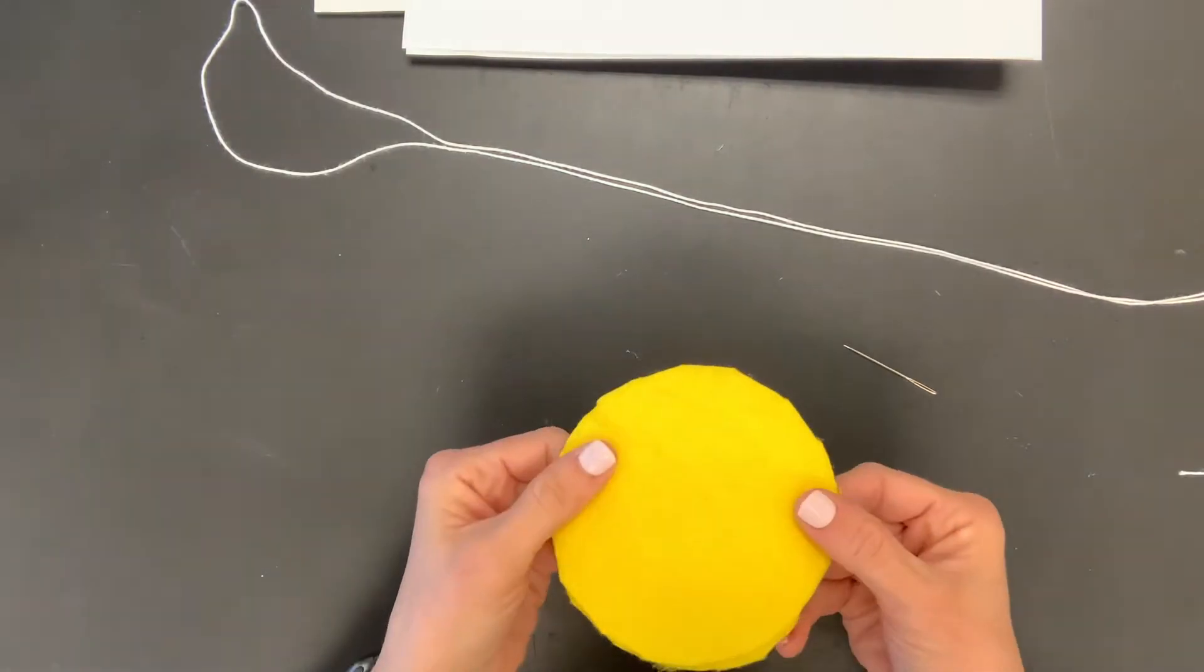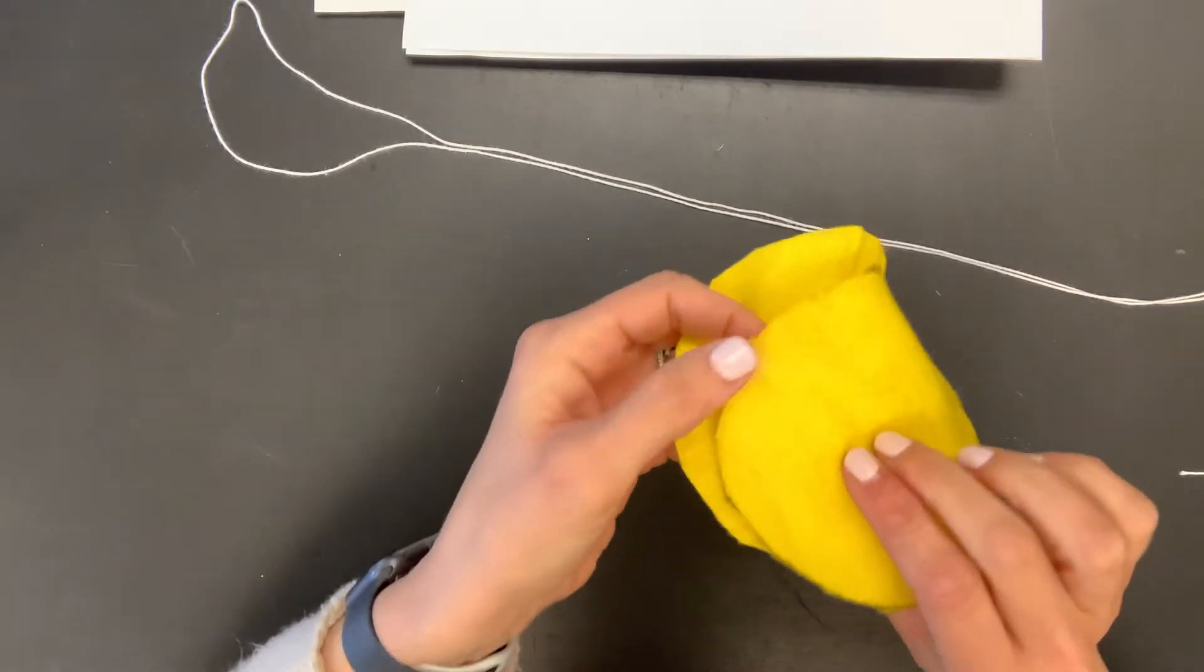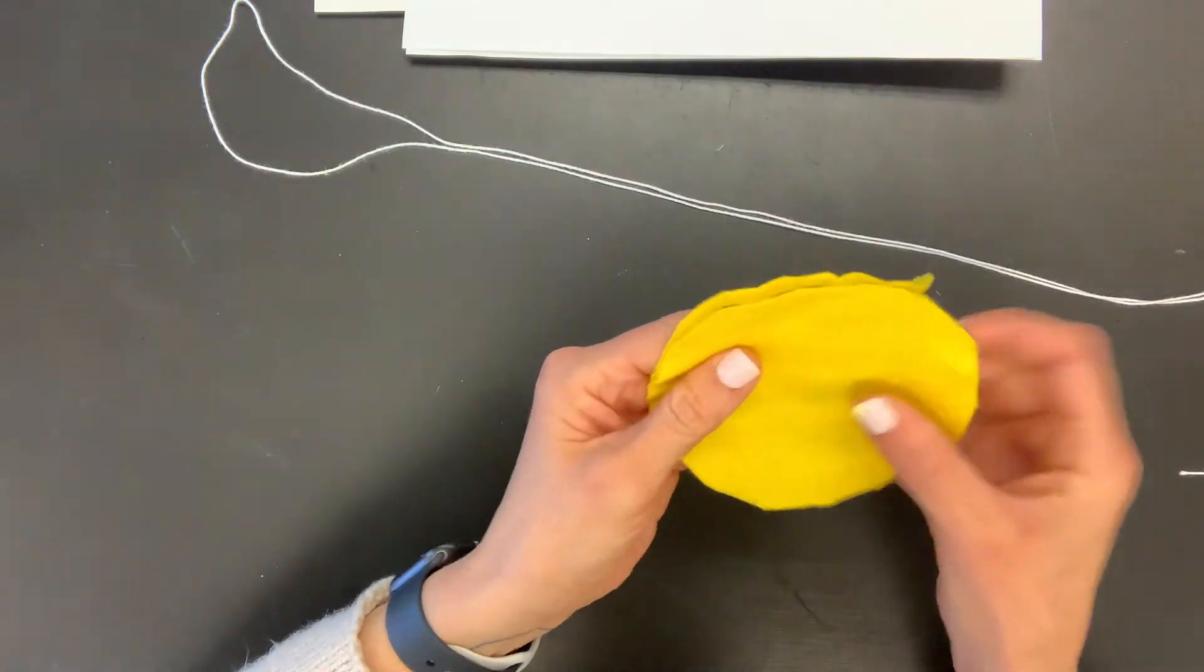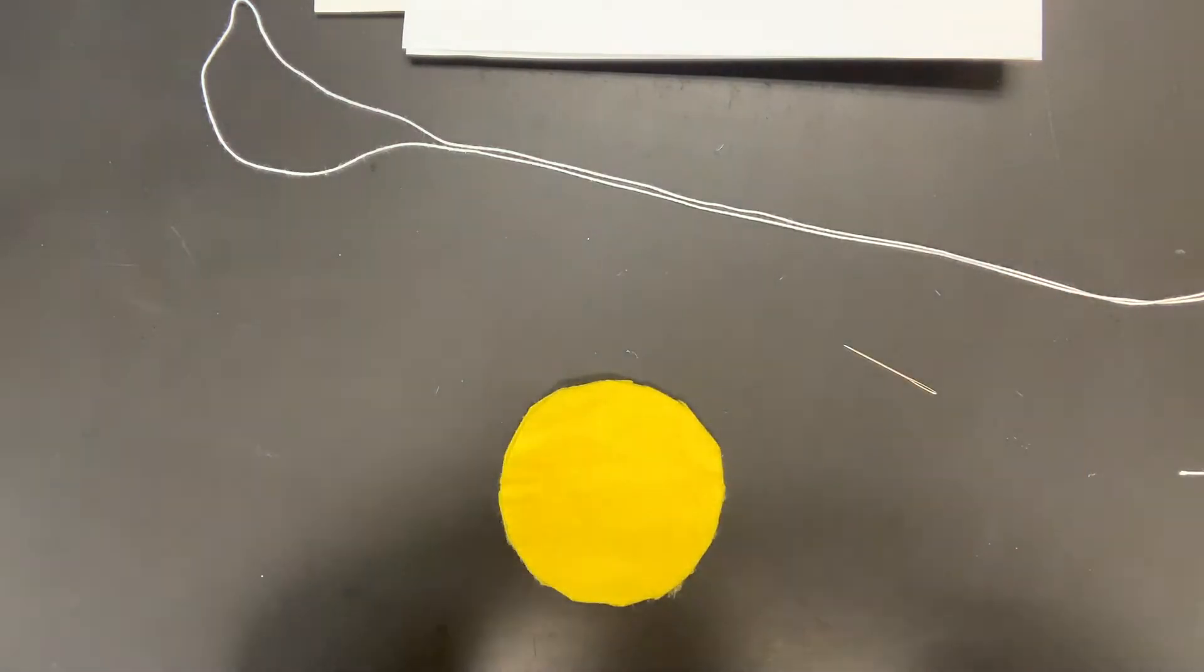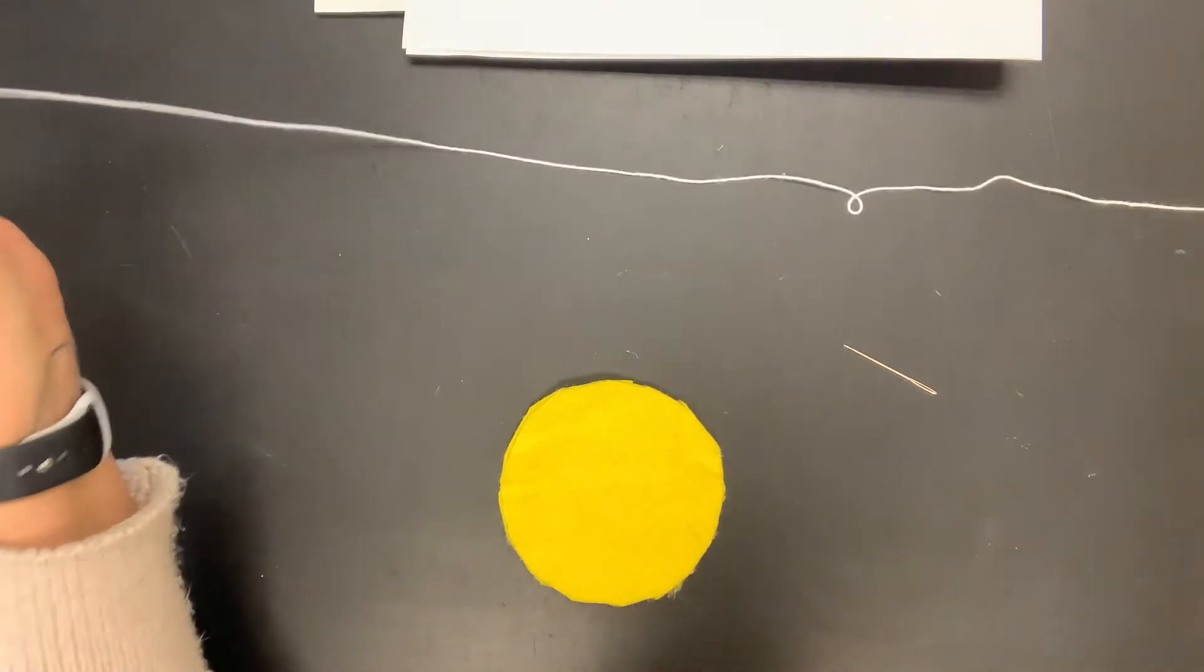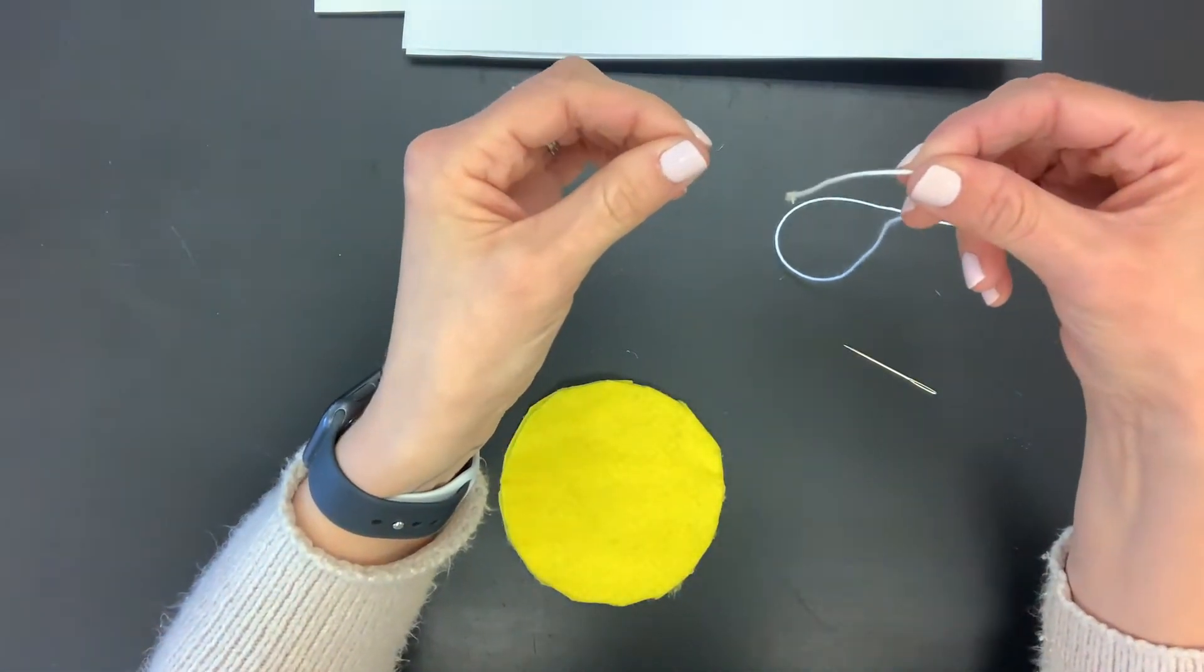So I've pre-cut all of these circles of yellow felt, and if you see Sharpie on the one side that I traced on there, you can just flip that so it's sandwiched on the inside. And now we're going to be talking about sewing, and if you've never sewn before, don't worry. We're going to do a really easy stitch.